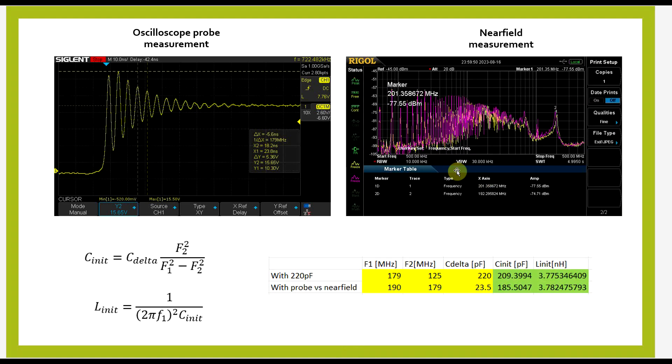So using this data, we can determine that the power supply circuit plus the probe have around 209 pF of parasitic capacitance, and 3.77 nH of parasitic inductance. Now, taking things one step further, also comparing our oscilloscope probe measurement to the near-field probe measurement, we had two different resonance frequencies, so 190 MHz for the near-field measurement, 179 MHz for the oscilloscope probe measurement,